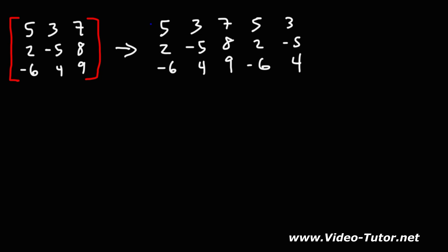So what we're going to do is we're going to multiply the numbers in a diagonal, starting from the top left, going to the bottom right. We're going to add these three products and subtract it by the sum of these three products in this direction.